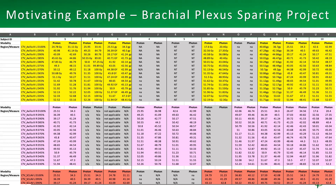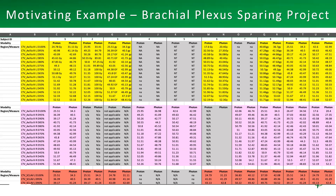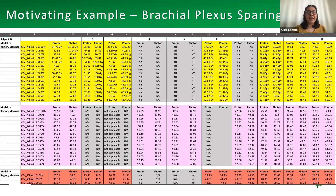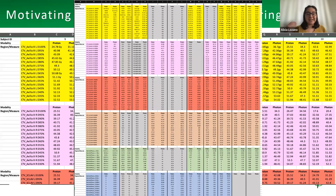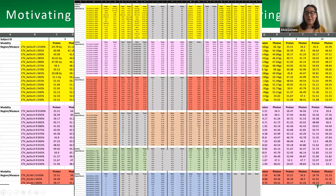Looking at column B, there are percentages, 'axilla CTV' labels, and 'Gy' units mixed in — non-numeric content alongside numeric values. Others noted in the chat: mixed notation with uppercase and lowercase 'NA' versus 'N/A', spaces in some areas, and blank rows. These are all important things to flag.